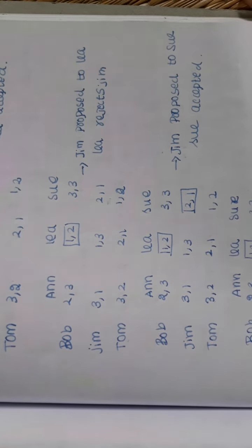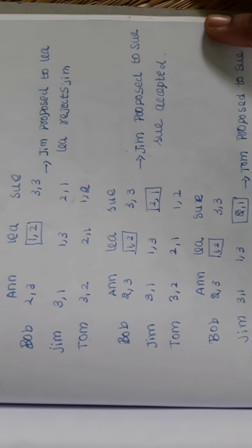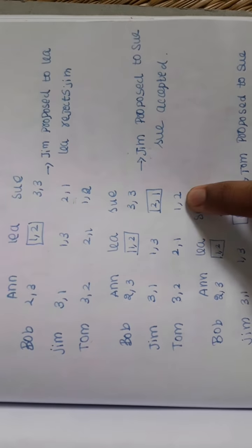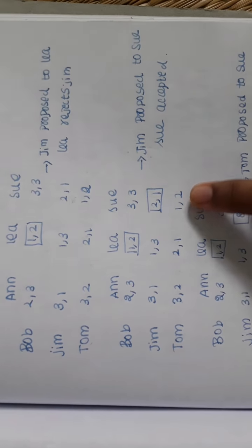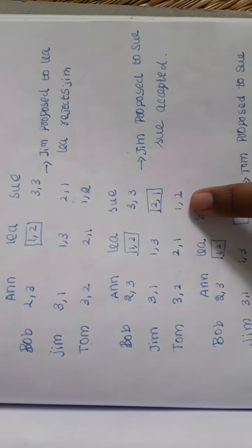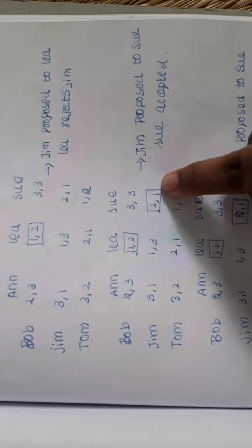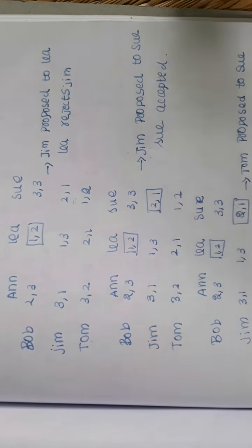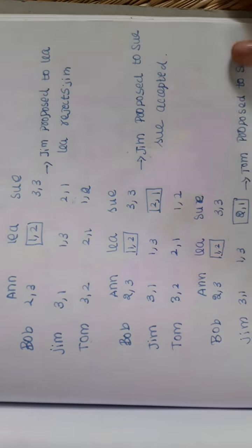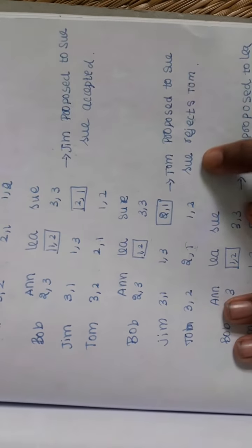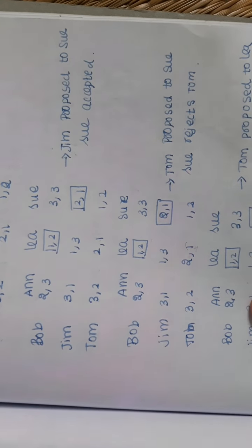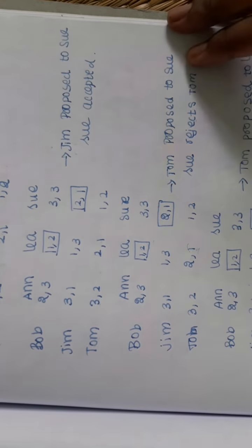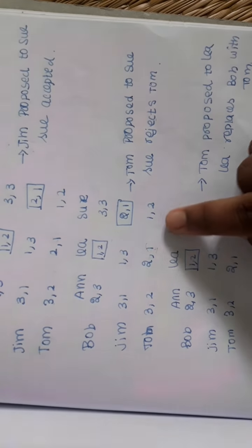Next, what do we do now? Tom will go. Let's see. Who is the first preference? Sue. Sue is the first preference for Tom. But Sue already has a boyfriend. He is the first preference. So she is coming. Sue will reject Tom. Next, what do we do? We will see Tom is in second place.